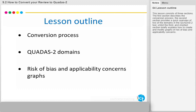This lesson consists of three sections. The first section describes the conversion process. The second section provides a quick overview of two of the domains in the QUADAS 2 tool, while the third and shortest section briefly explains how to create and modify graphs of risk of bias and applicability concerns.